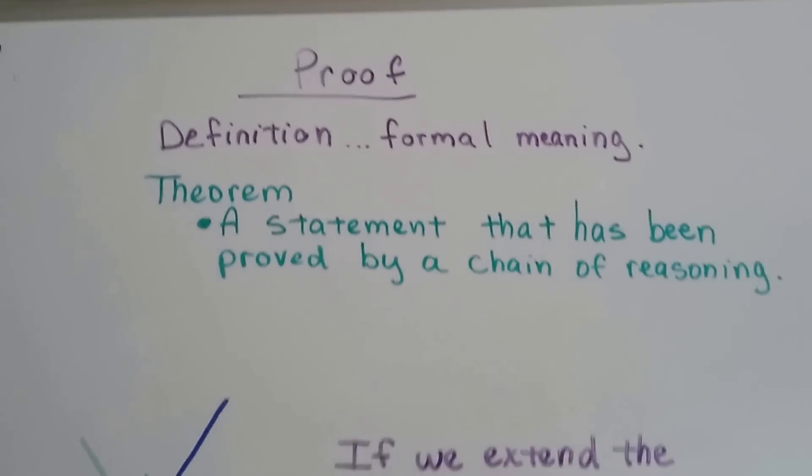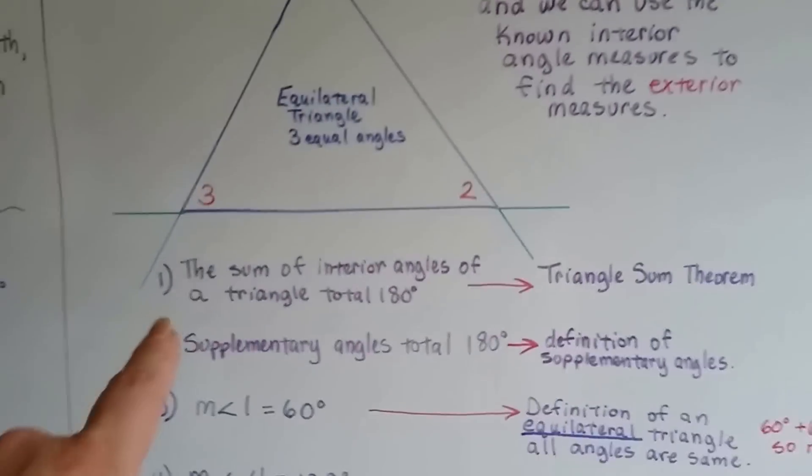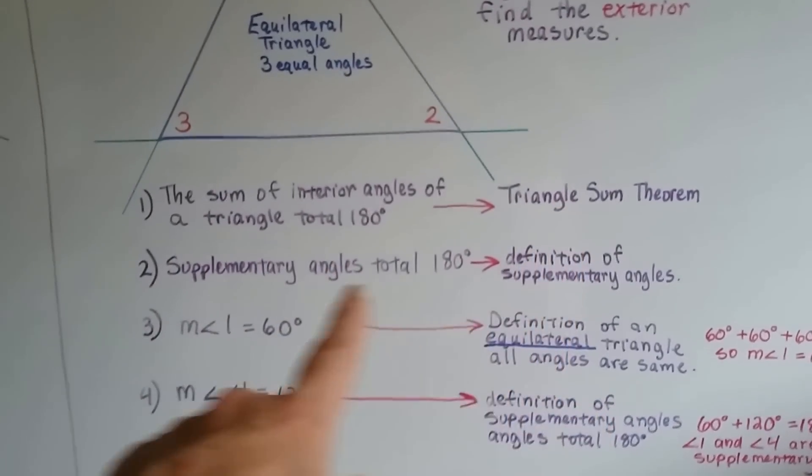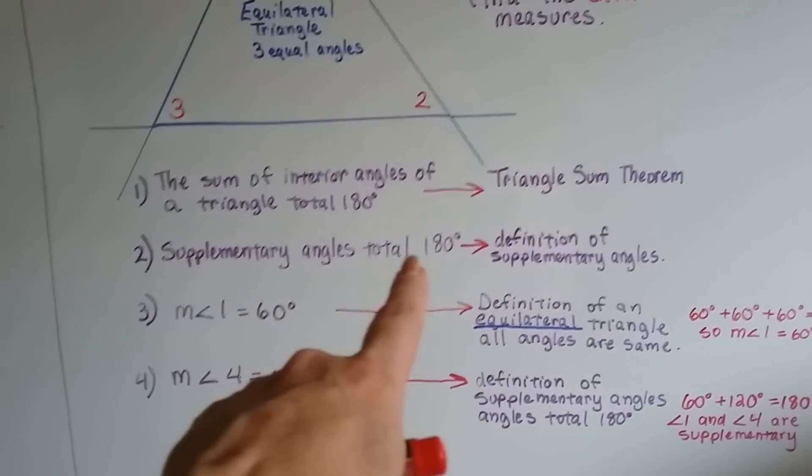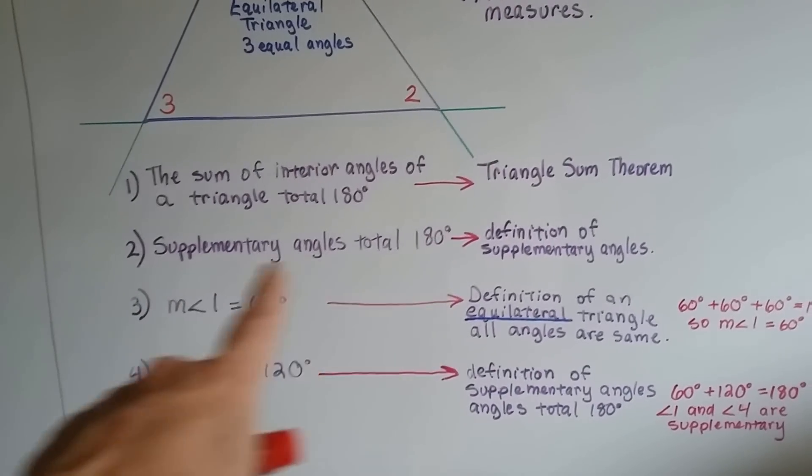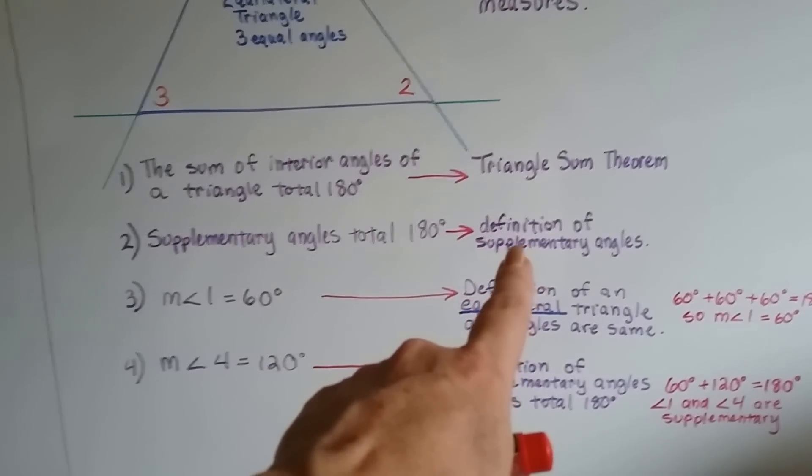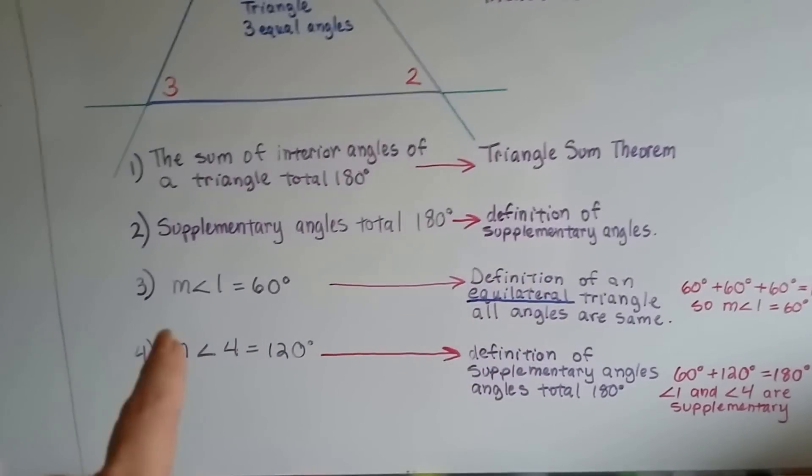So let's take a look at this. We know that the sum of interior angles of a triangle total 180 degrees because of the triangle sum theorem. We also know that supplementary angles total 180 degrees. We've talked about that in previous videos. So that's the definition of supplementary angles, isn't it?